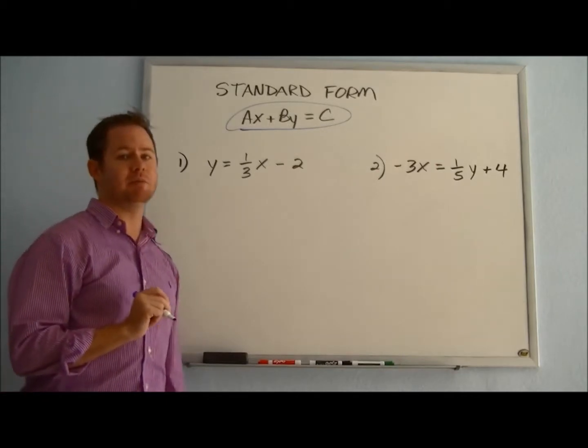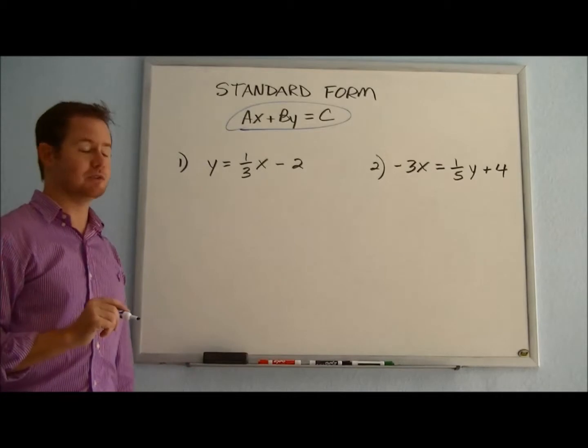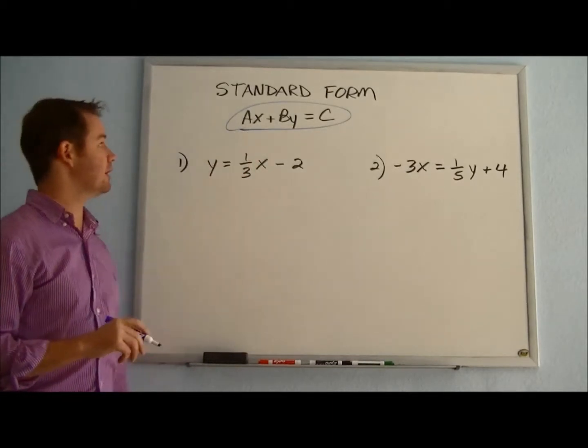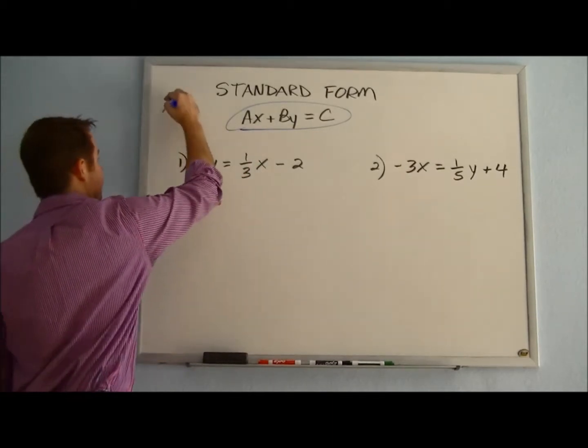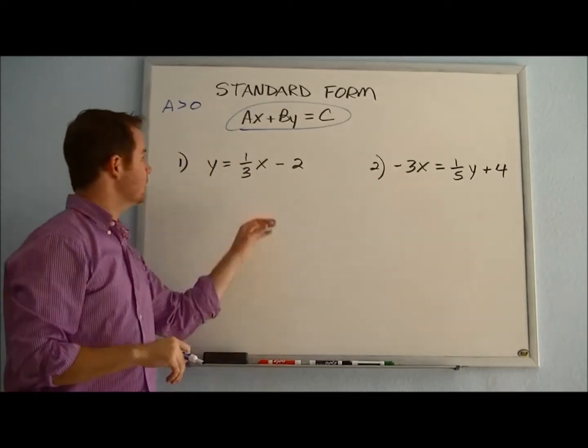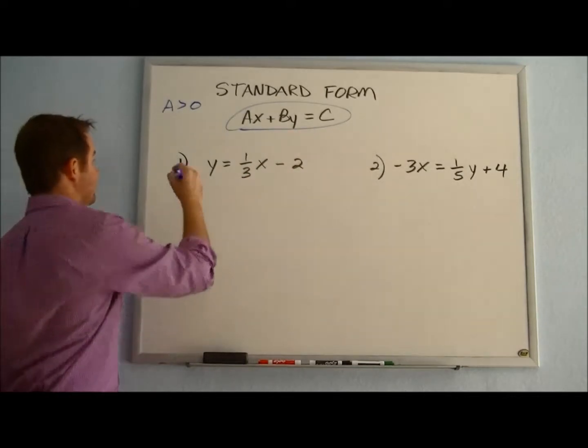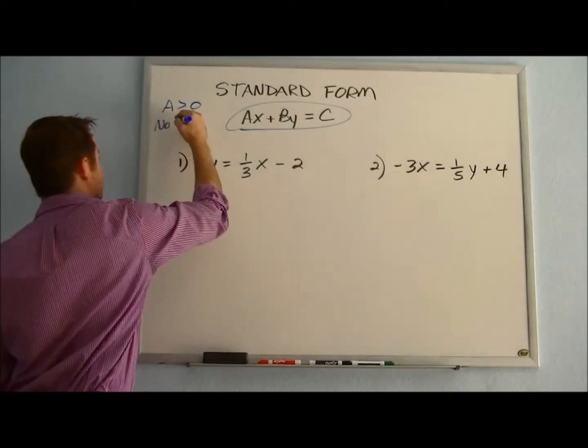Now there are a couple of rules that we want to keep in mind about standard form. First of all, for the coefficient on x, we want that coefficient to be positive. So we want A to be greater than zero. And then secondly, we want all whole number values, or rather integer values on these, which means no fractions.